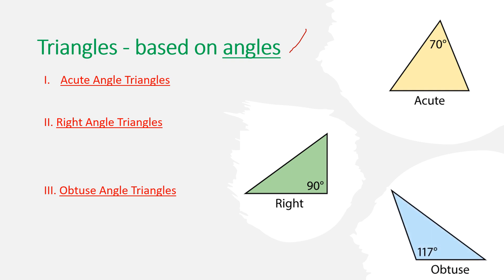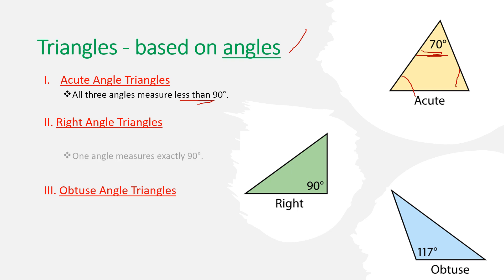Let's look at the acute angle triangle first. An acute angle is, by definition, an angle less than 90 degrees. If one angle is less than 90 degrees, naturally the remaining two will also be less than 90 degrees, because the total sum of all three angles must be 180 degrees.